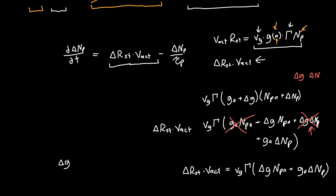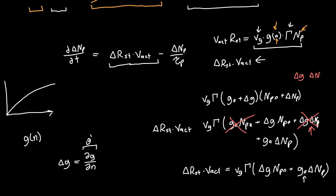We can write delta_G in terms of the carrier density, since G is a function of carrier density and is approximately logarithmic. We just use the derivative with respect to carrier density, which I'll call G-prime — just a number you can calculate if you have the gain versus carrier density curve and know your DC gain value G_0, so you can find the slope. Then delta_G equals G-prime times delta_N. This is simply the linear term of our Taylor series expansion for delta_G, keeping the equations linear so we can solve them in the usual ways.